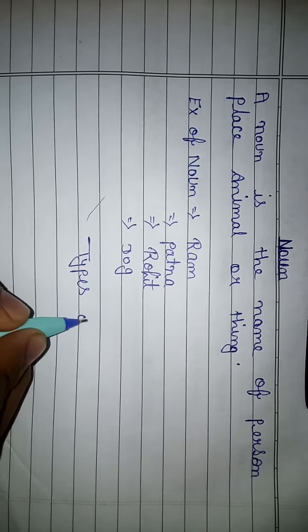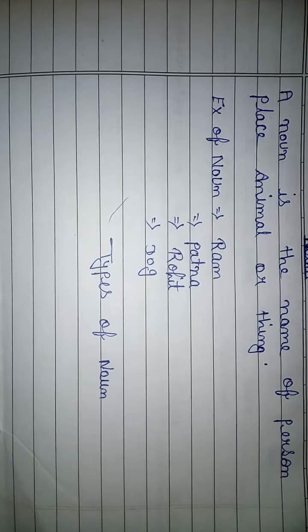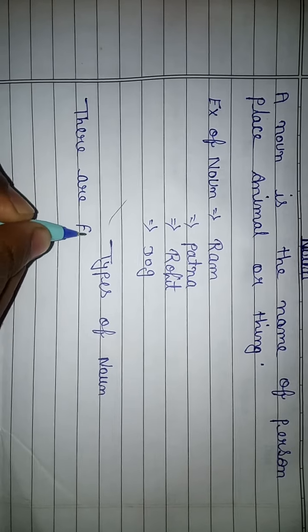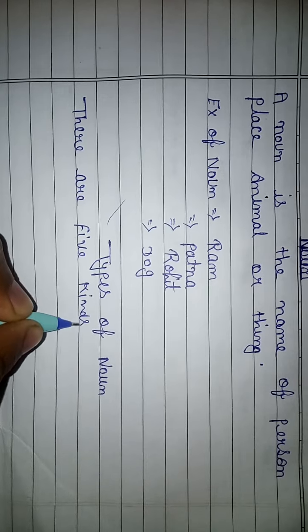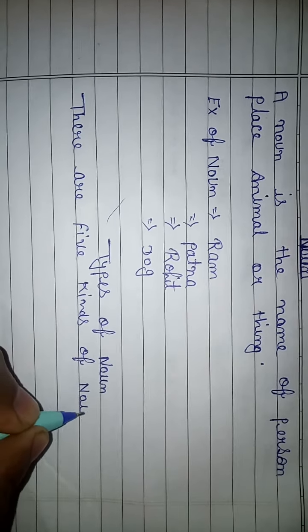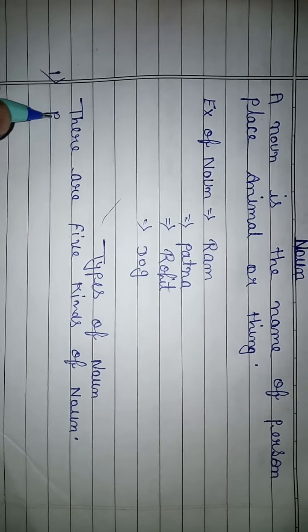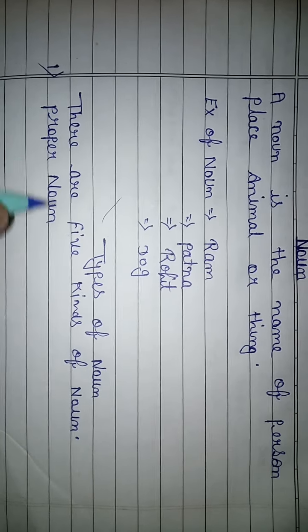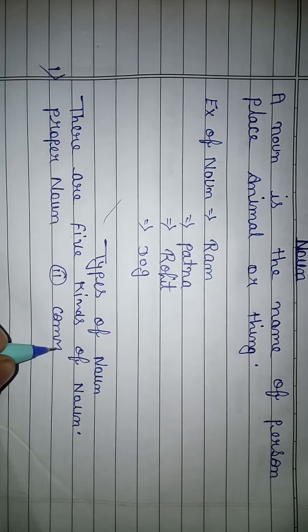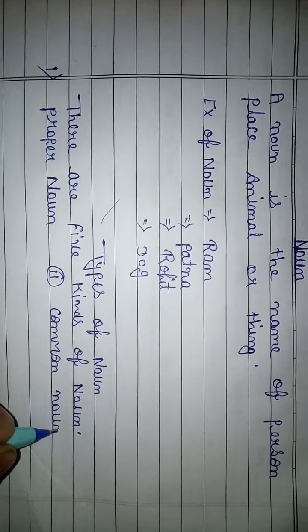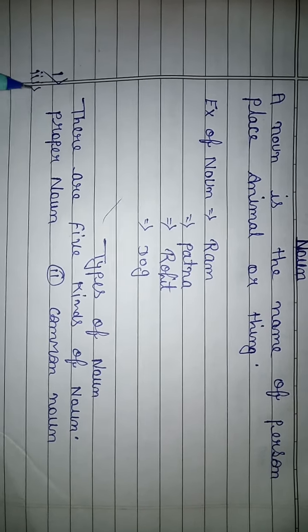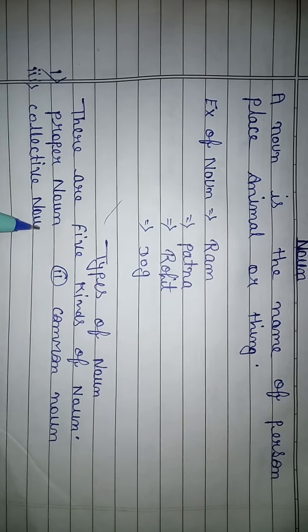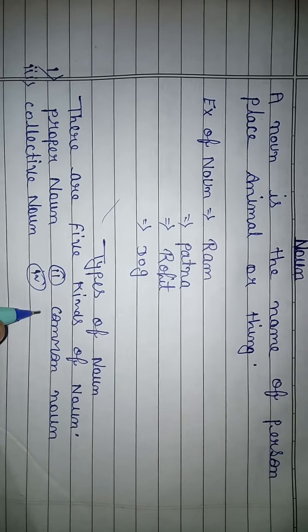Types of noun: there are five kinds of noun. First is proper noun, second is common noun, third is collective noun, fourth is material noun.